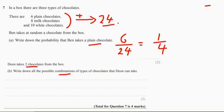So we might have plain followed by plain. Might get double plain. Might get plain milk. I'm just trying to be very systematic here. And then maybe plain and a white chocolate.